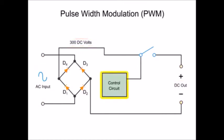A control circuit operating a DC switch turns the DC output on and off. This controller device can be an SCR or a powerful transistor.